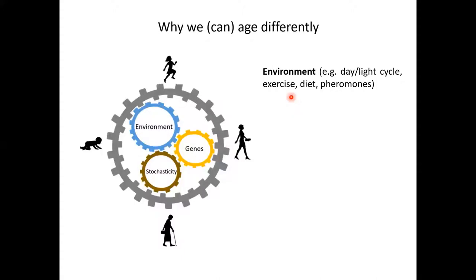Environment is a major factor that contributes to aging and to different aging patterns among individuals. You can have nutrition, environmental stressors, toxins, the daylight cycle, pheromones that can affect the lifespan or the healthspan of an organism.